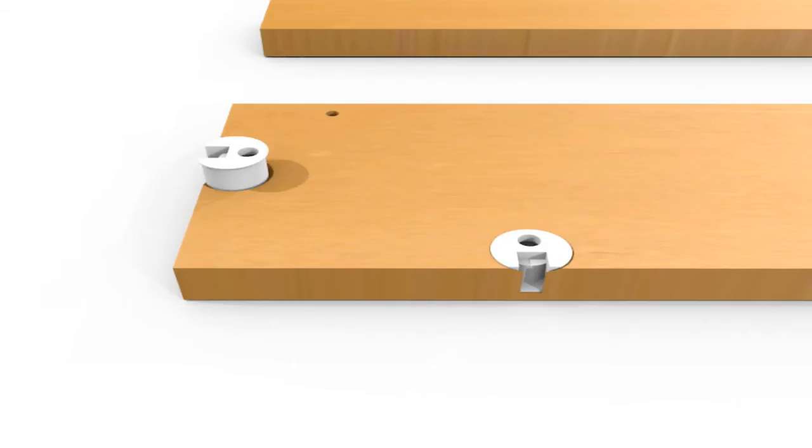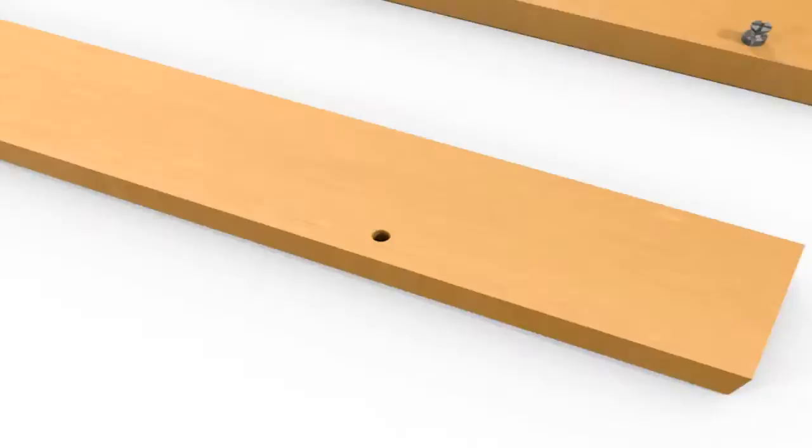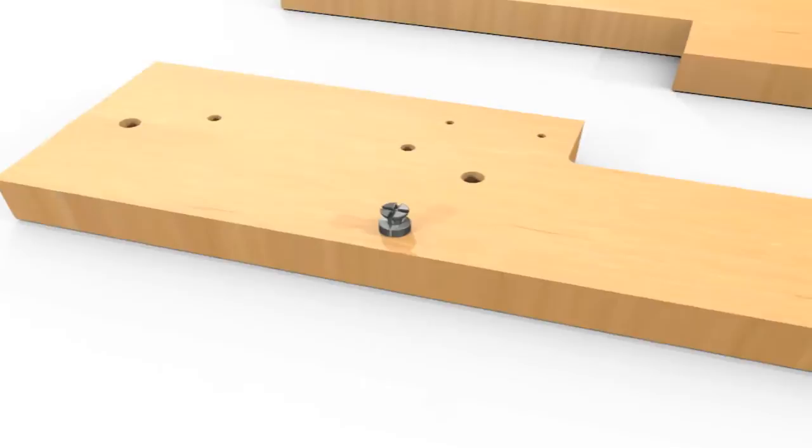Then the cam bolts are screwed in, both to the side and to the upright part of the cabinet. Now we'll attach the grille clip using two of the 16mm round head screws.